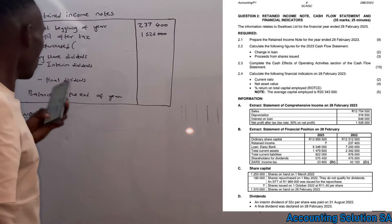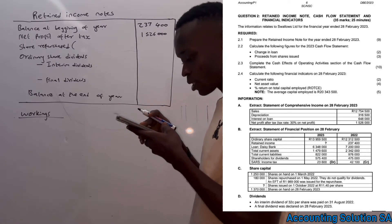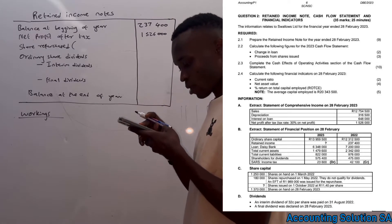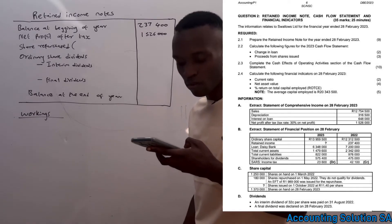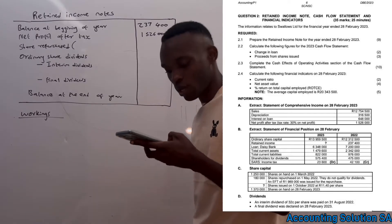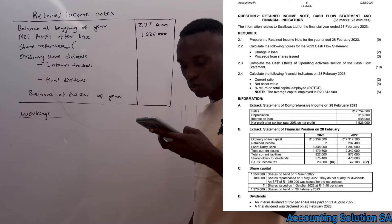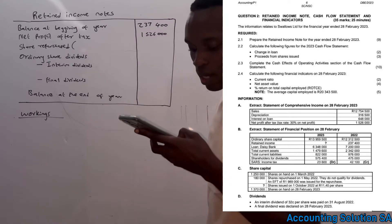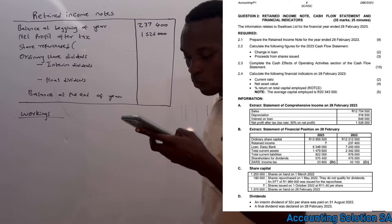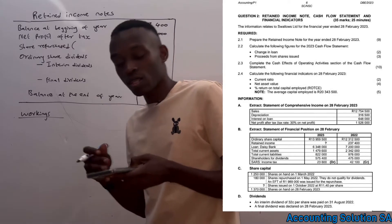Now we are going to deal with the repurchase of shares. Under share capital we are told that at the beginning we had 1,250,000 shares on hand. The share repurchase on 1 May 2022 — those shares do not qualify for dividends — and an amount of R1,989,000 was paid for the repurchase of shares. They gave us the total amount but did not tell us how many shares were repurchased.